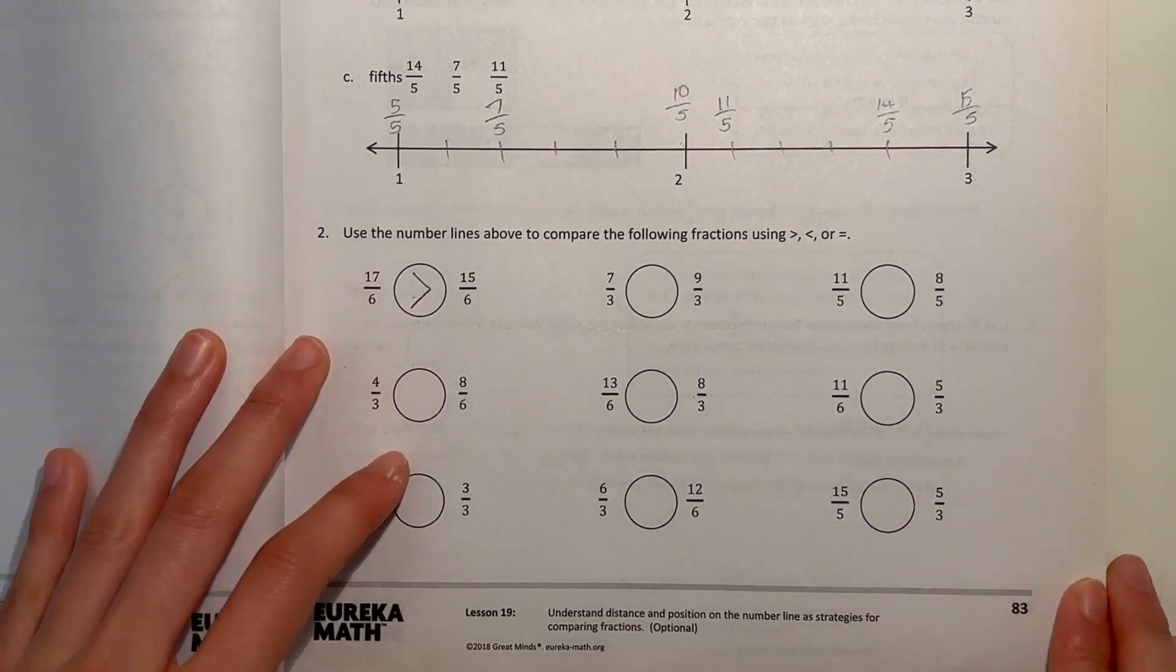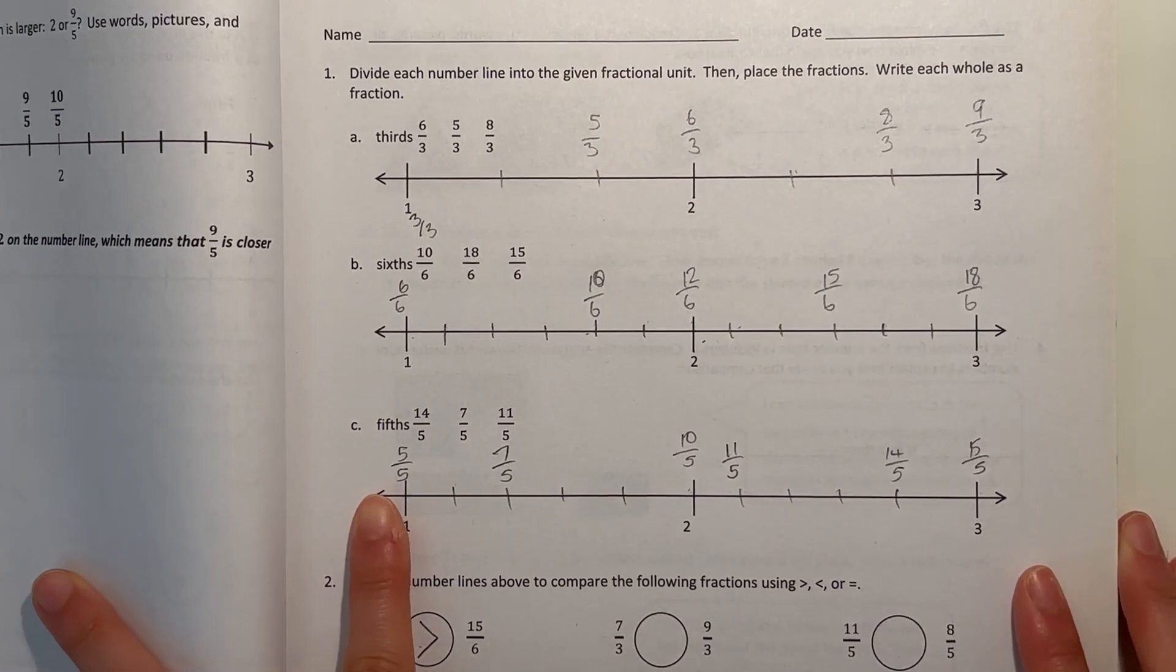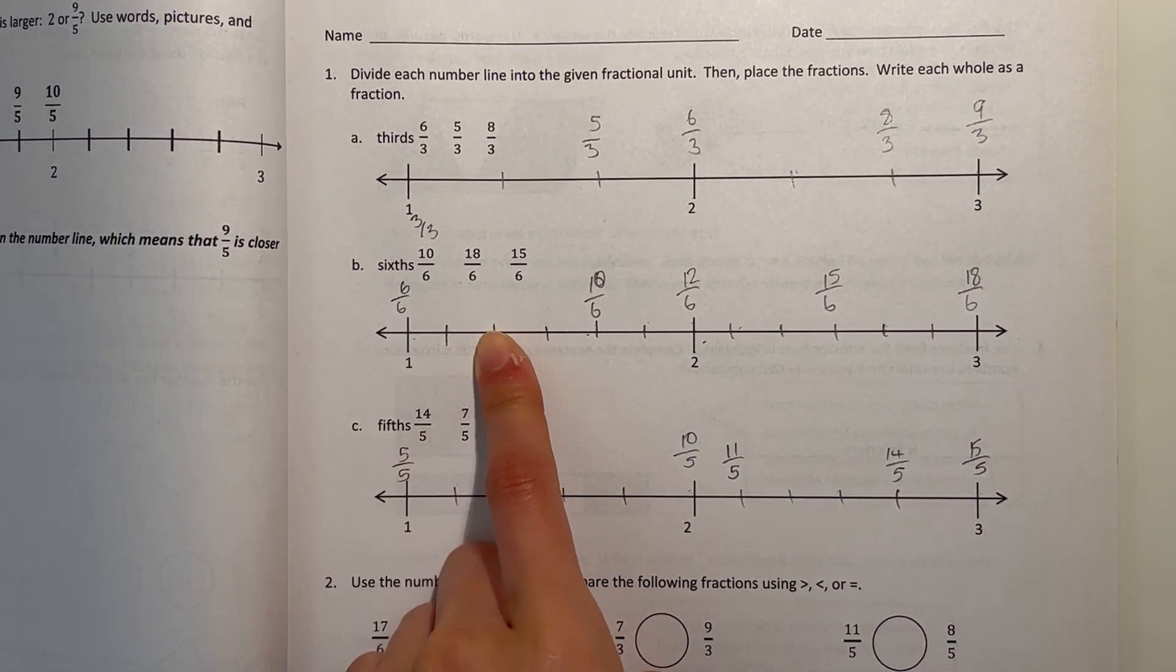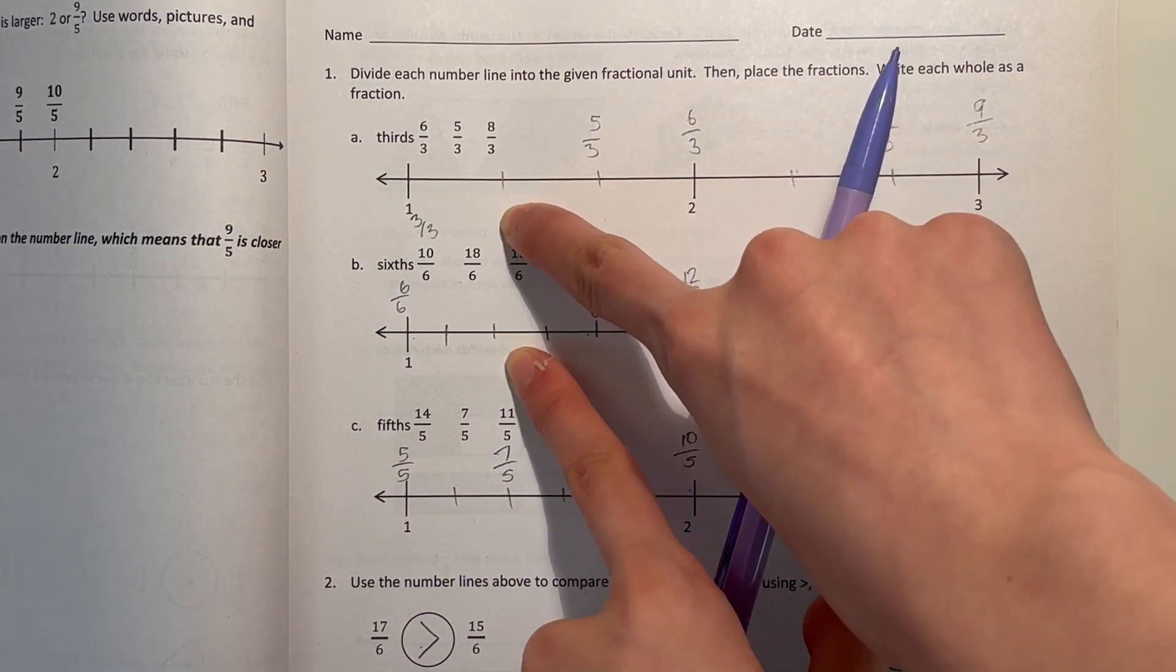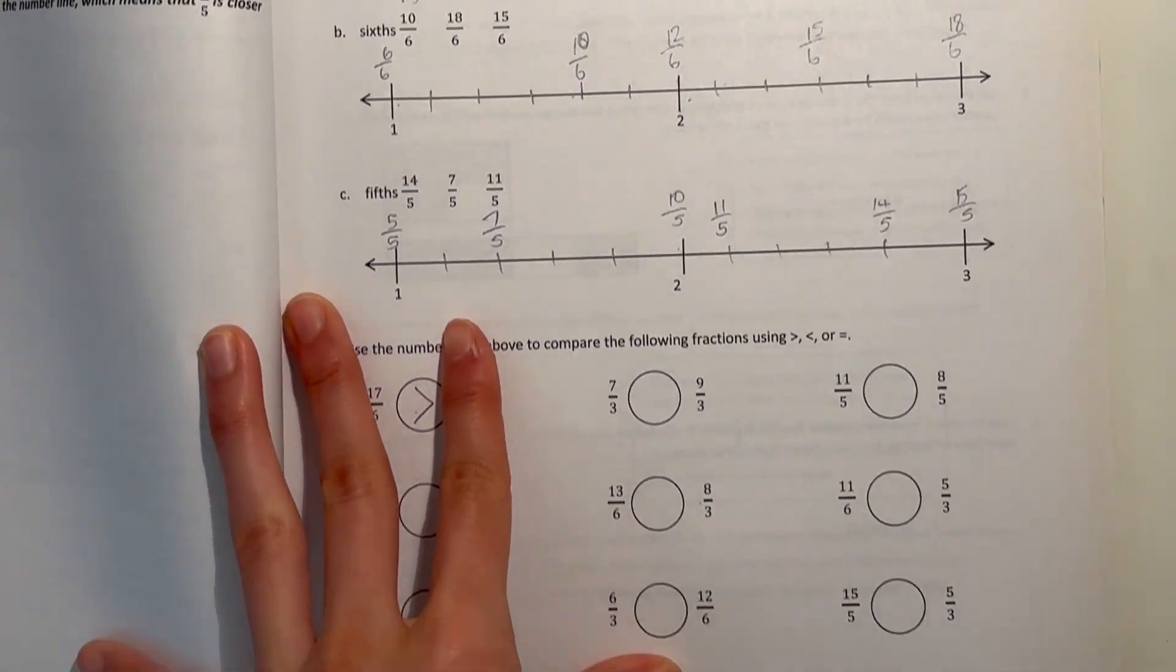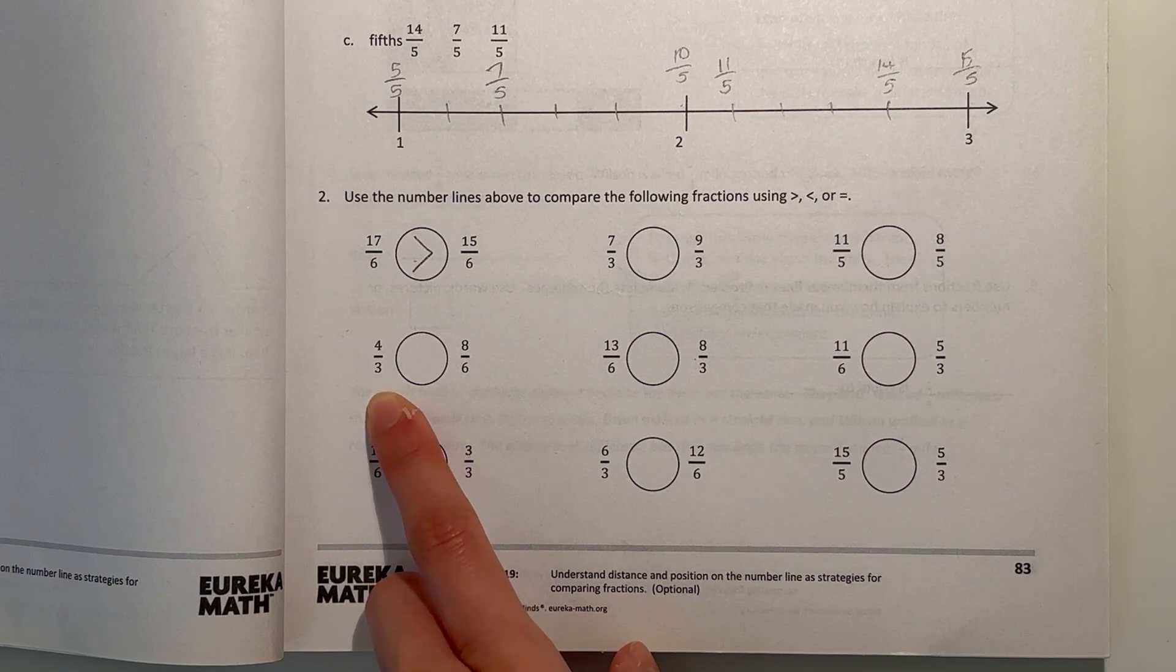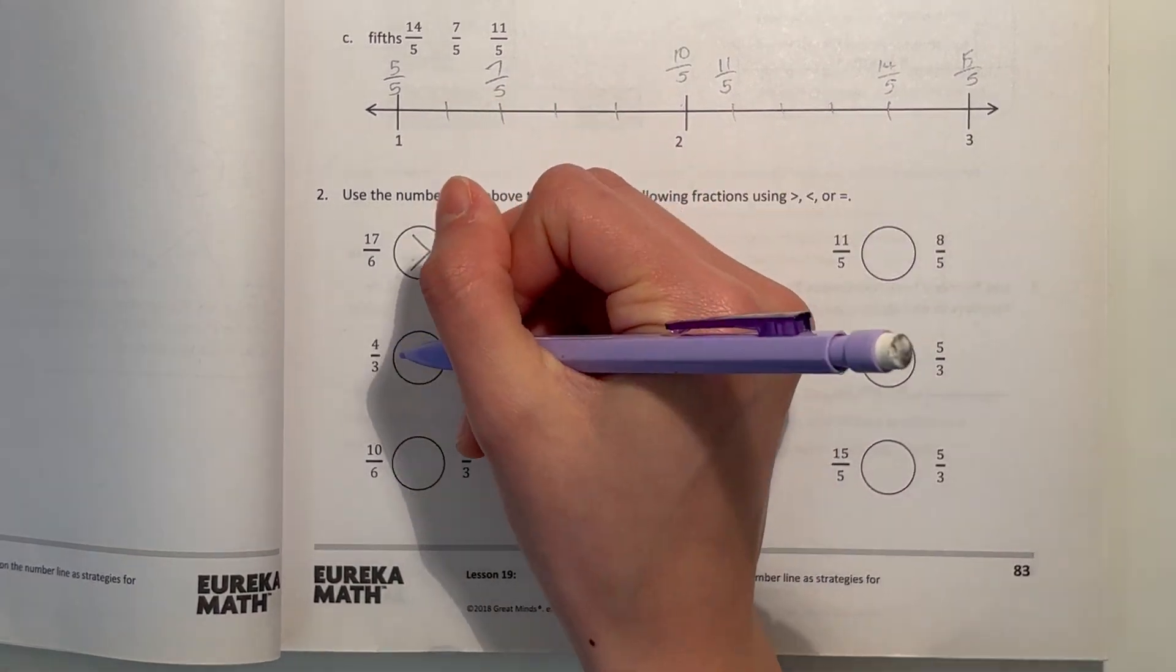Now over here, we have 4 thirds and 8 over 6. Look at the number line. 8 sixths would be right here. And 4 thirds would be right here. So if you can tell, they're kind of equal to each other. And if you multiply 4 thirds by 2, you'll get 8 sixths. So these are equal.